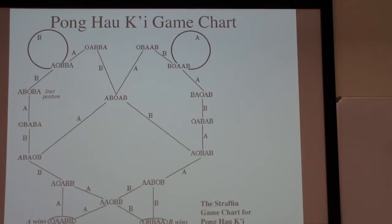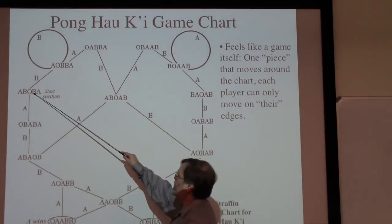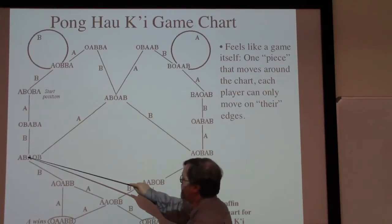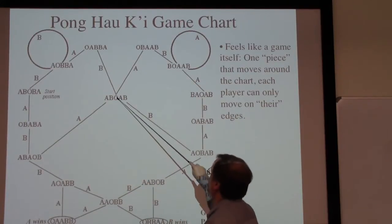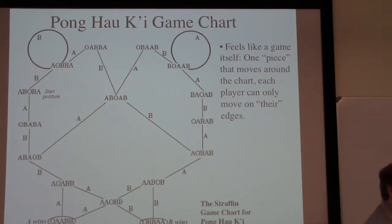We were talking about Pong Hao Qi and the basic chart for that, so here is the game chart, if we completed it, for Pong Hao Qi. In some sense, this plays on — it feels a little bit, when you have one of these game charts, as if it were a game itself. We start here, and if player A goes first they have no choice except to move here; B has no choice except to go here; A has no choice except to go here. Now finally B has a couple of choices — they can either go that way or this way. So it sort of feels like we're just kind of moving pieces around on this board instead of the game board.